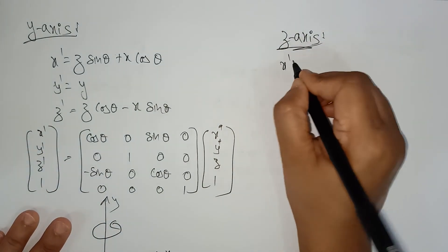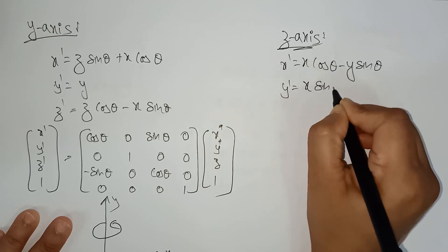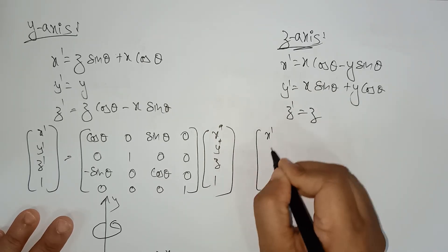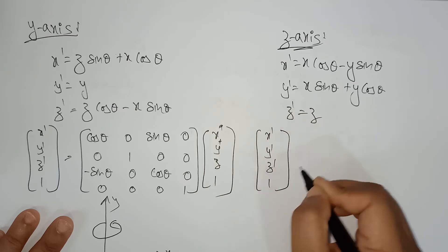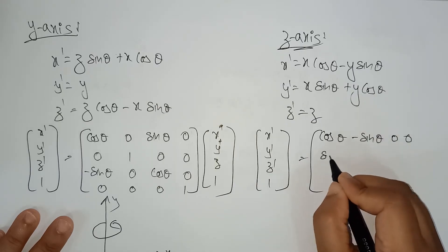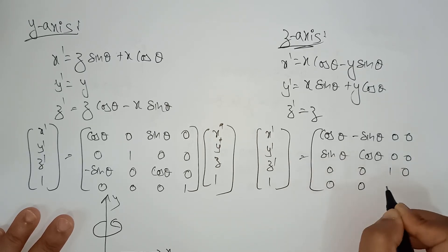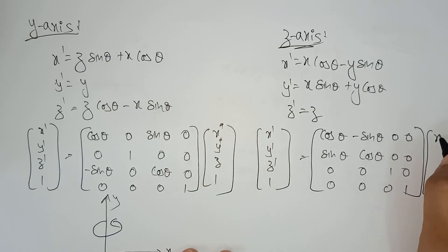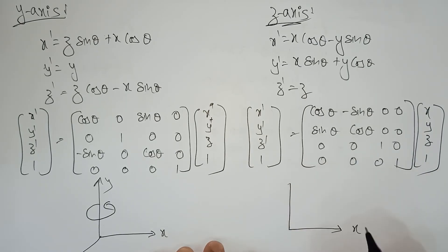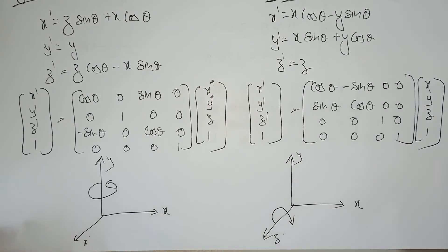For z-axis rotation: x dash equals x cos theta minus y sin theta, y dash equals x sin theta plus y cos theta, and z remains the same — z dash equals z. The homogeneous matrix is: [cos theta, minus sin theta, 0, 0 / sin theta, cos theta, 0, 0 / 0, 0, 1, 0 / 0, 0, 0, 1] multiplied by x y z 1. This is how the object rotates in the z-axis direction.